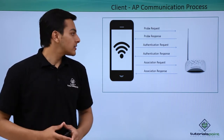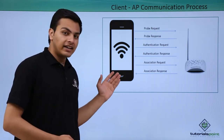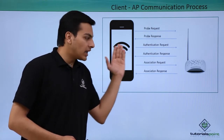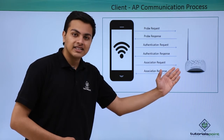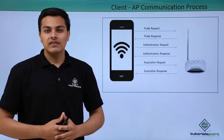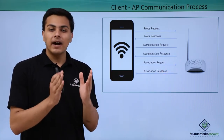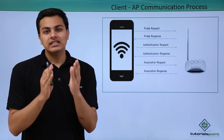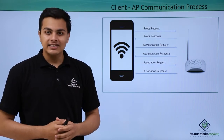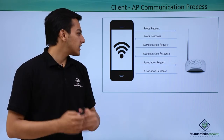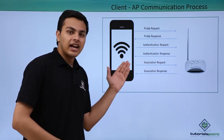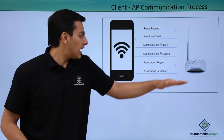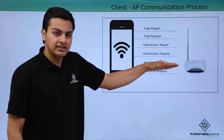Once the probe response is received by our client, the client or mobile phone will send an authentication request to that access point. In that authentication request, our client will send a passphrase. Once the passphrase and authentication request are accepted by the access point, the access point will send an authentication response. Once our client receives the authentication response, the authentication part of the communication is complete.